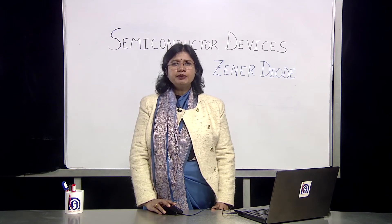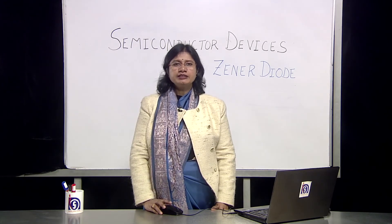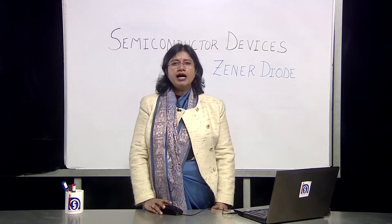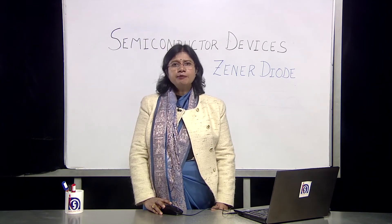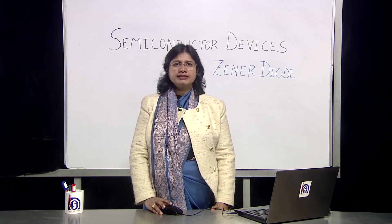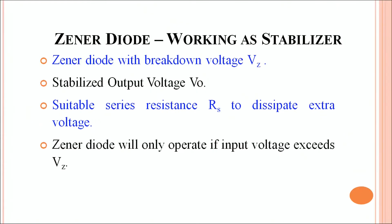Even if there are ripples — meaning the current varies slightly — these fluctuations are completely ignored by the Zener diode, and across the load resistance you always get a fixed output voltage. Thus a simple Zener diode acts like an excellent voltage regulator. The Zener diode works as a stabilizer, with a breakdown voltage Vz indicating the value at which it enters its breakdown region, and the output is stabilized to V0, independent of the unregulated input.